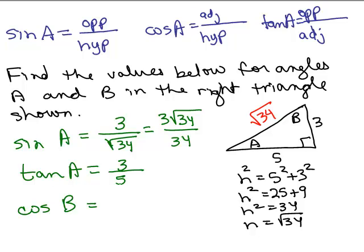How about the cosine of B? Now I look at angle B. The cosine is the adjacent side over the hypotenuse. The side adjacent to B is 3, over the hypotenuse which is the square root of 34 — that's the same as the sine of A. The side opposite A is the side adjacent to B, so the sine of one angle equals the cosine of the other. We'll do more problems in the next video.